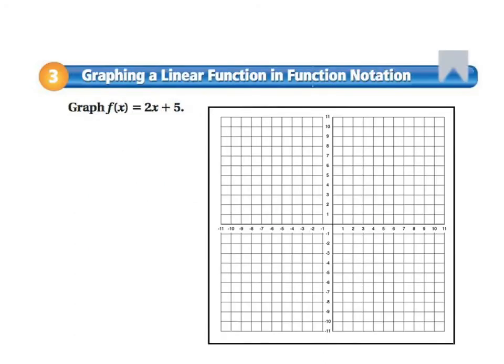Okay, the last thing that you'll be asked to do is to graph a linear function. From function notation, I really just want to remind you that f of x and y are interchangeable. So f of x equals 2x plus 5 is the same as y equals 2x plus 5, which we can all graph pretty easily by now. We know that the y-intercept is at 0, 5. It's our b value. And we know that the slope is 2 over 1.